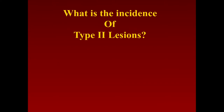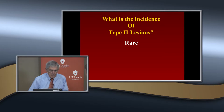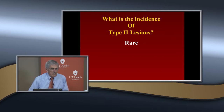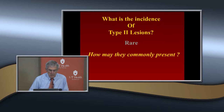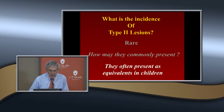The incidence of type 2 lesions is pretty rare — they're not talked about very much. When we did our first edition of a fracture textbook, I could only find one article, with only one case in children. Since then, in the 40 years I've been working in children's fractures, I've probably accumulated about 10. So you see it, and it's very important that you recognize it. They're commonly present as equivalents.